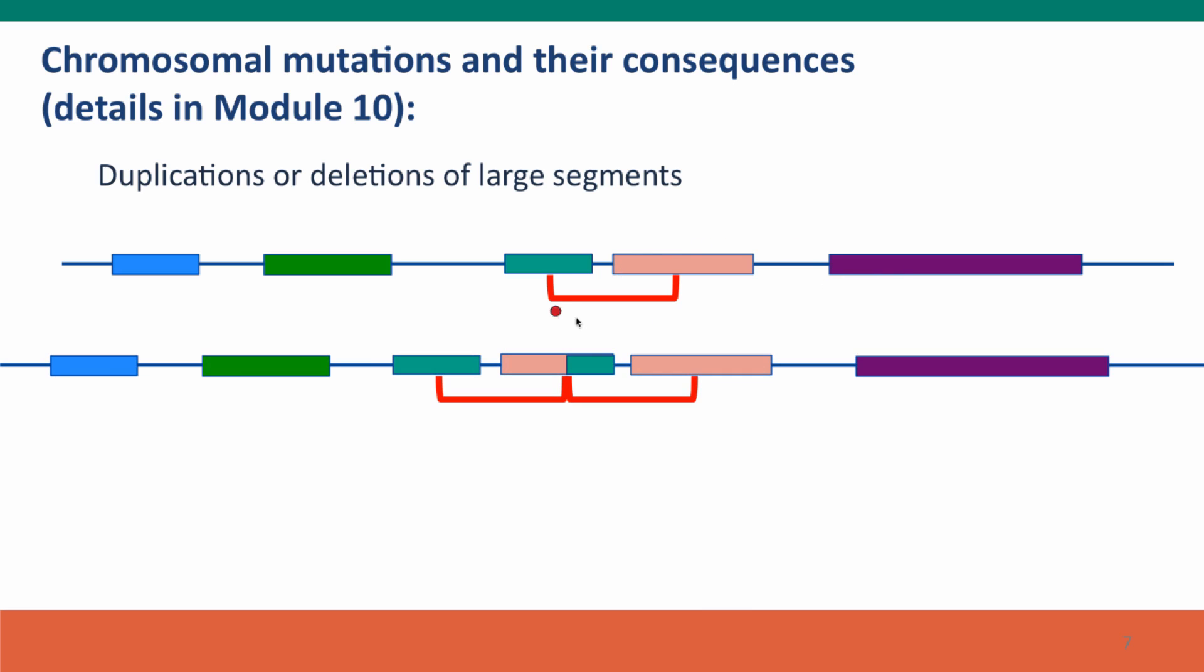So here's a duplication where this segment shown in red is now present twice. We call it a tandem duplication because the two copies are side-by-side.